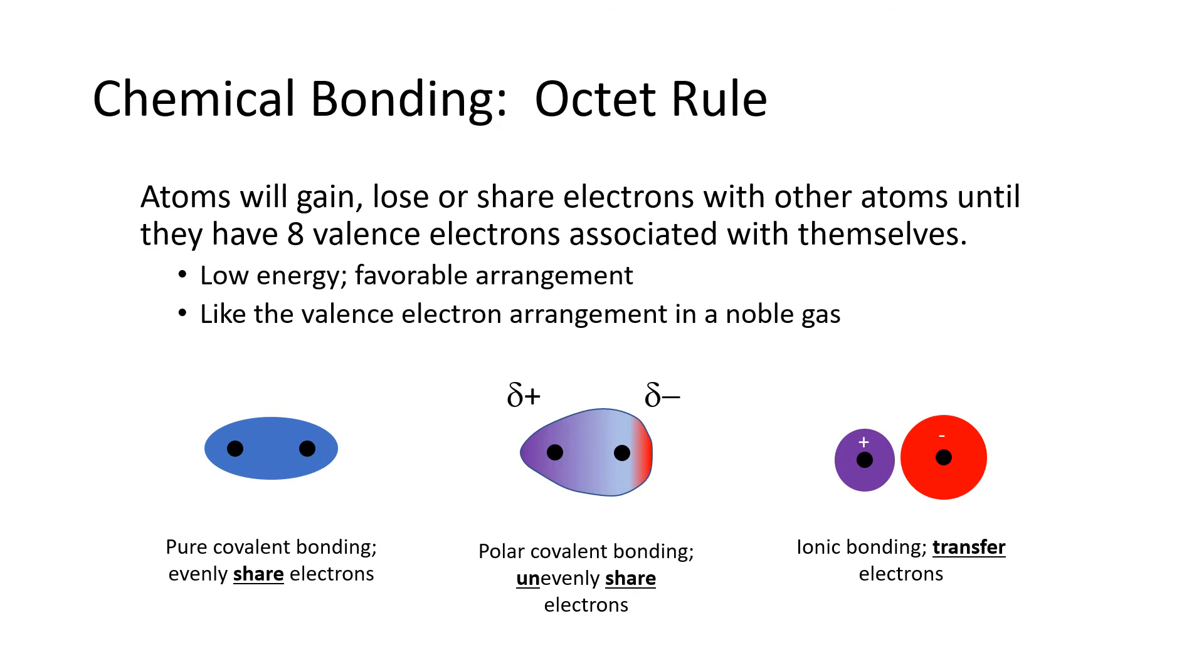So atoms will either gain, lose or share electrons with other atoms until they have eight valence electrons. This results in a very low energy favorable arrangement of the electrons that looks very much like the arrangement in a noble gas.